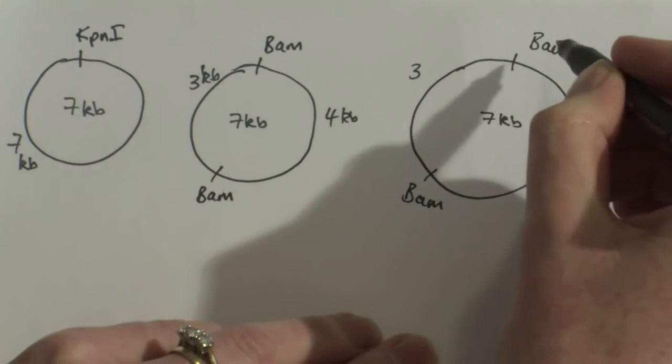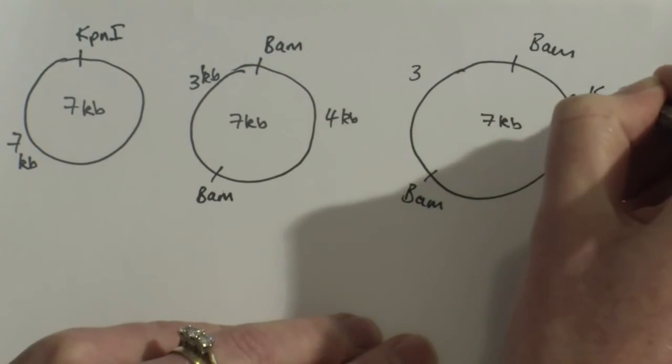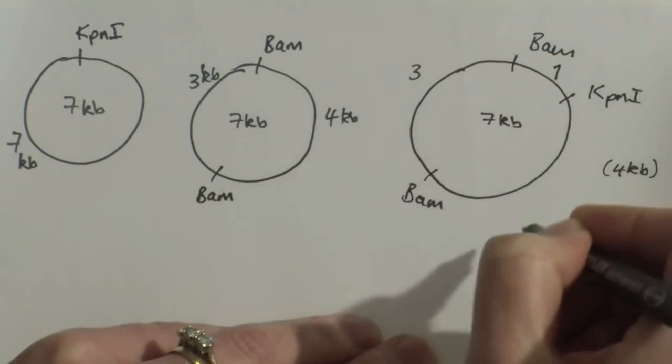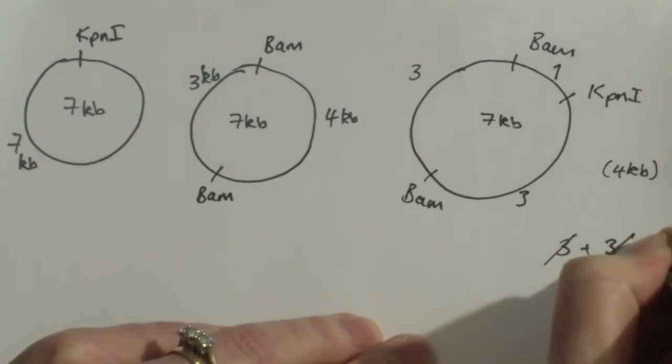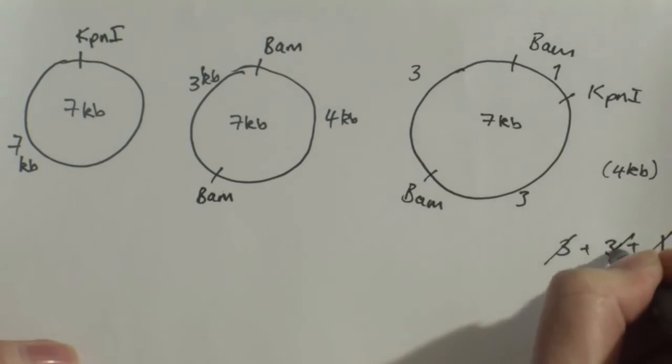And what's left over here was 4kb and I need to split my 4kb into 3kb and a 1kb. So I can imagine that my KPN1 cuts here. Splitting this 4kb into a 1kb and a 3kb and that's all the bands I saw on the gel resolved.